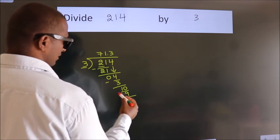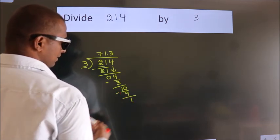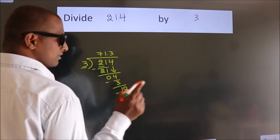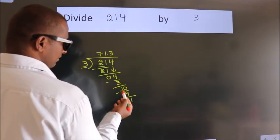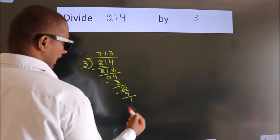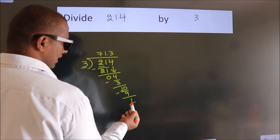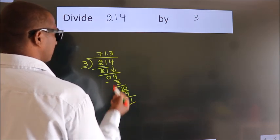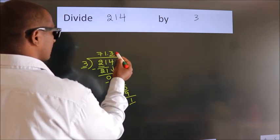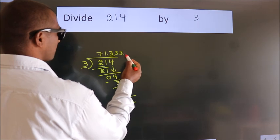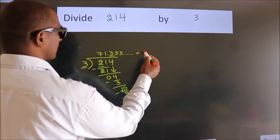Now we subtract. We get 1. Now you observe, we had 1 here, and we got 1 again. That means this number keeps on repeating. So this is our quotient.